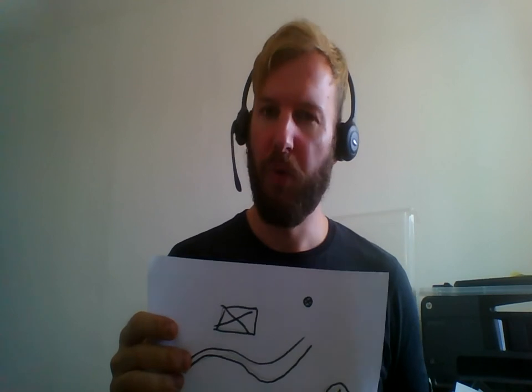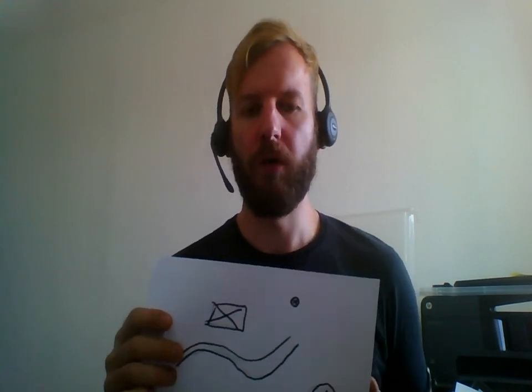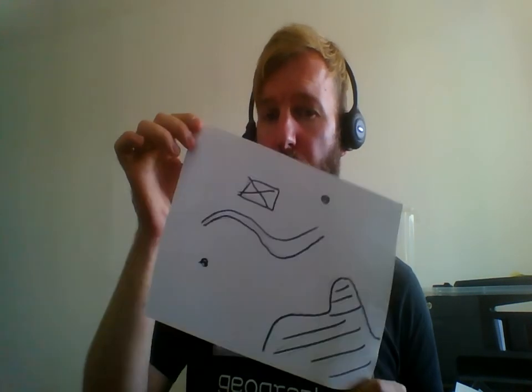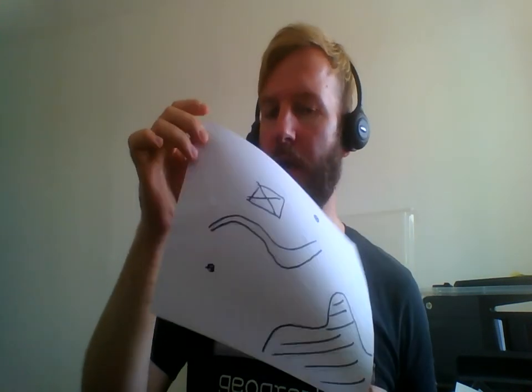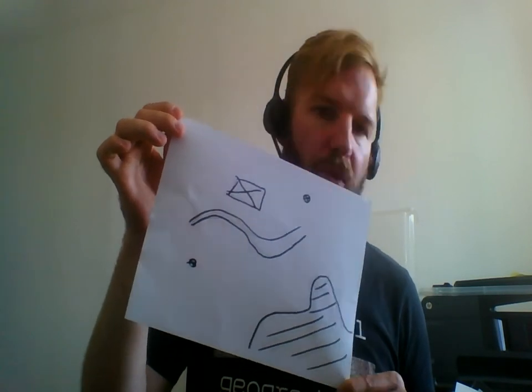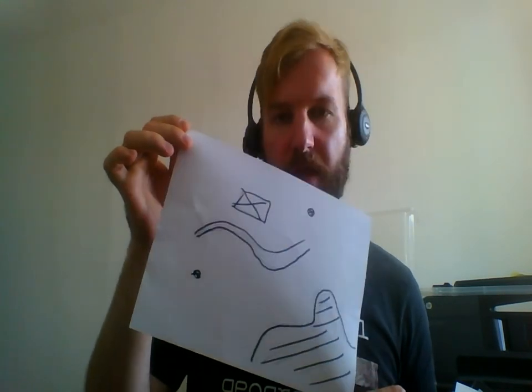Once again, polynomial degree one — also called an affine transformation — requires three points. One point still allows you to rotate the map; two points still allow rotation but fix an axis; three points fix everything, and your map is geo-referenced correctly. Thank you very much for watching, take care and goodbye.